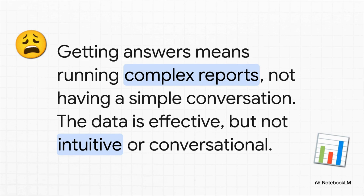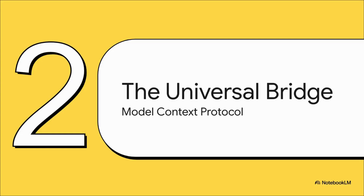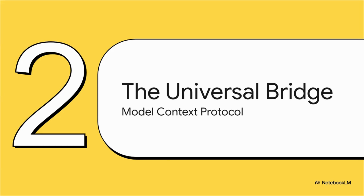Well, guess what? That is all about to change. How do we bust our data out of this digital jail? The answer is this brilliant new open-source standard called the Model Context Protocol, or MCP for short. This is the key that's going to unlock everything for us. MCP is essentially a universal language — a standard translator — that lets AI applications like ChatGPT or Gemini talk directly to other software, like your Odoo database. It creates a standard way for them to communicate.